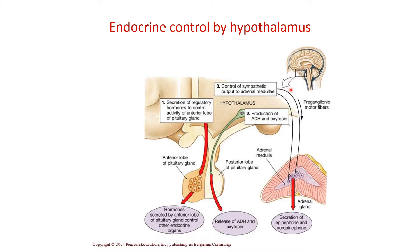Another way is through the hypothalamus's effect on the sympathetic nervous system activity. When we are under stress, for example, the sympathetic nervous system will be activated. The sympathetic fibers will eventually terminate in the adrenal medulla and cause the secretion of norepinephrine and epinephrine.